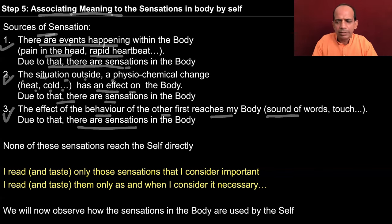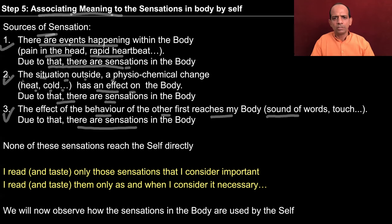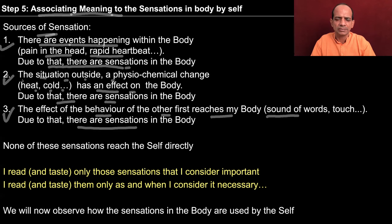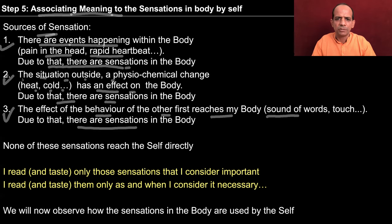You can pause and try to distinguish between these three sensations: those happening within the body, the physiochemical events taking place outside the body that have an effect on the body, and the behavior of the other person — for example, somebody talking to you, the voice reaching your ears, and from the ears it reaches you, producing sensations in the body.